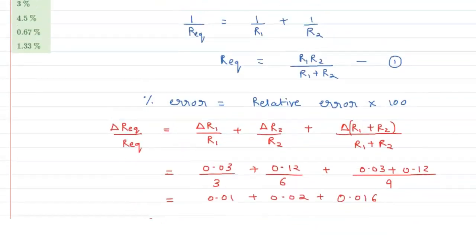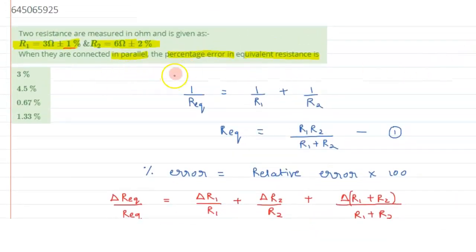So this is the percentage error we are getting for the equivalent resistance in parallel, which matches with option B. So I hope you have understood the concept and thank you for watching.